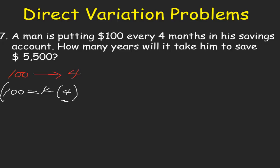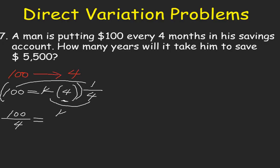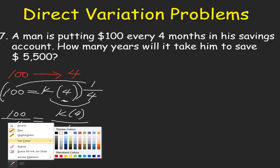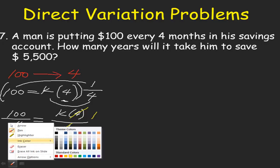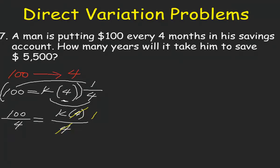To cancel out 4, divide both sides of the equation by 4. So 100 divided by 4 equals k times 4 divided by 4. And 4 divided by 4 is 1. So 100 divided by 4 gives us 25. Our value for k is 25.